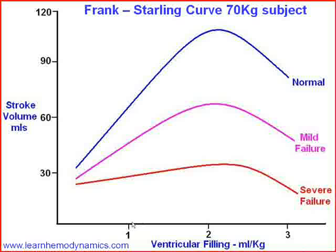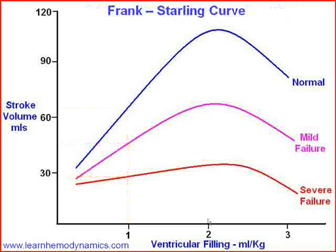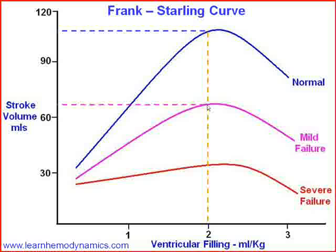If we load this ventricle at 1 ml per kilo, then we have a stroke volume of 70 mils from our normal patient. Our heart failure patient, not quite so good, perhaps 45 mils. But our severe cardiac failure patient cannot manage 30 mils. So let's increase preload. At 2 mils per kilo, our normal heart responds well with 110 mils. Even our mild failure can now maintain 70 mils. But our severe heart failure is still struggling at just 33 mils.